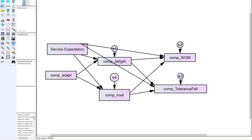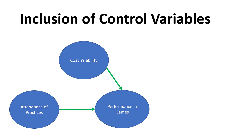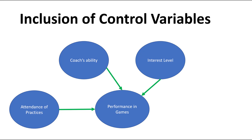You can have multiple control variables. Going back to our baseball example, we think attendance of practices could lead to performance, but maybe we include a control variable of coach's ability — because how good a coach they are might influence how many practices players attend, but also influence performance in games. You may also include the interest level of the player — if they really love baseball, they'll probably attend more practices, and their interest level will probably directly influence how they perform in games. You're using these control variables to hold constant some of these other possibly omitted variables that could bias your results.